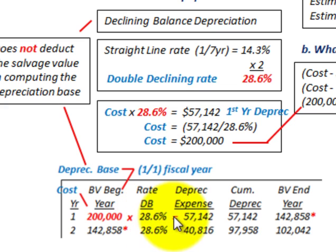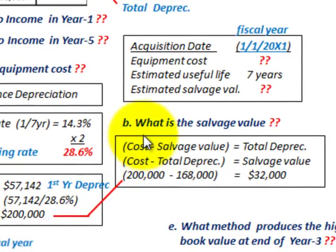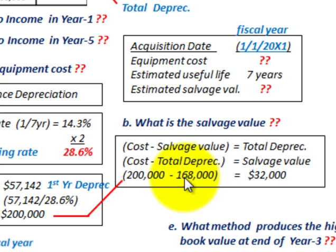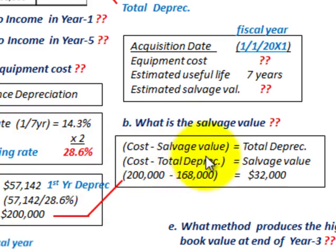Knowing our rate and our depreciation expense, we're able to determine the equipment cost of $200,000. Now for the salvage value: we know that total depreciation equals cost minus salvage value. Rearranging, salvage value equals cost minus total depreciation. Our cost is $200,000 and our total depreciation from the schedule is $168,000, so the difference gives us a salvage value of $32,000.